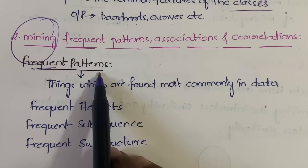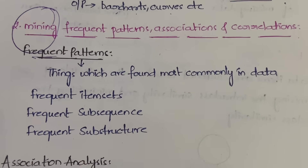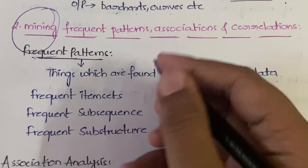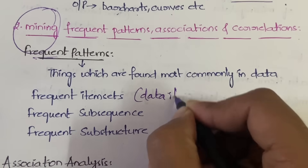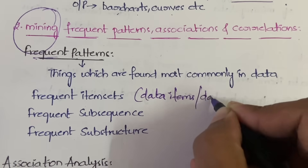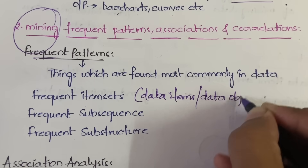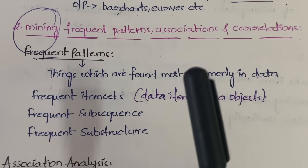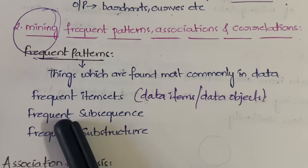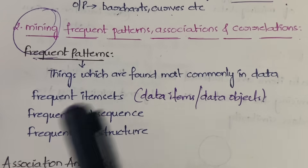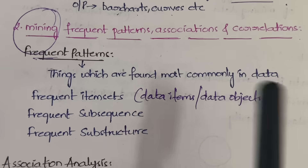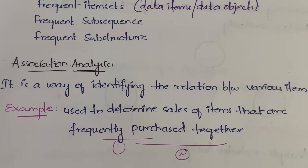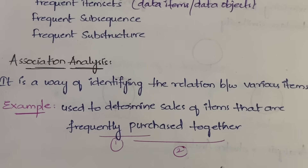Within frequent patterns, we have frequent item sets — data items which are occurring frequently. We also have frequent subsequences — subsequences which are occurring more frequently — and frequent substructures, which are data structures occurring more frequently.